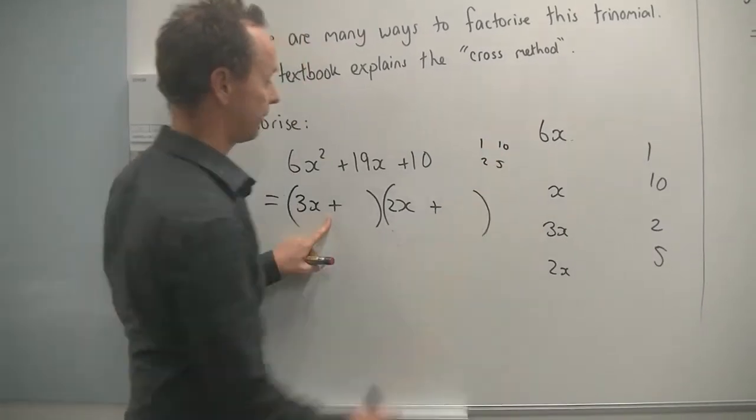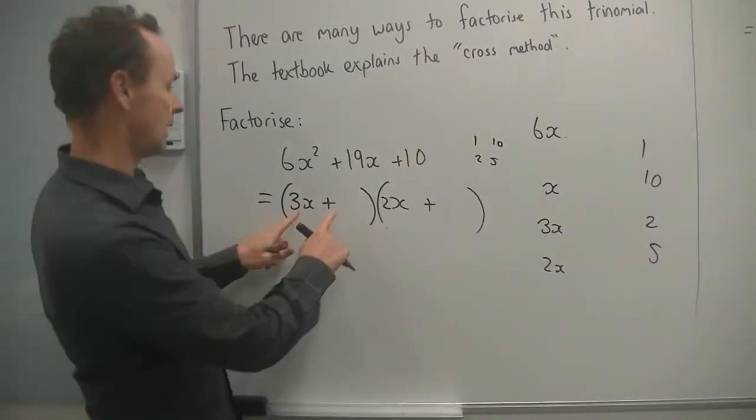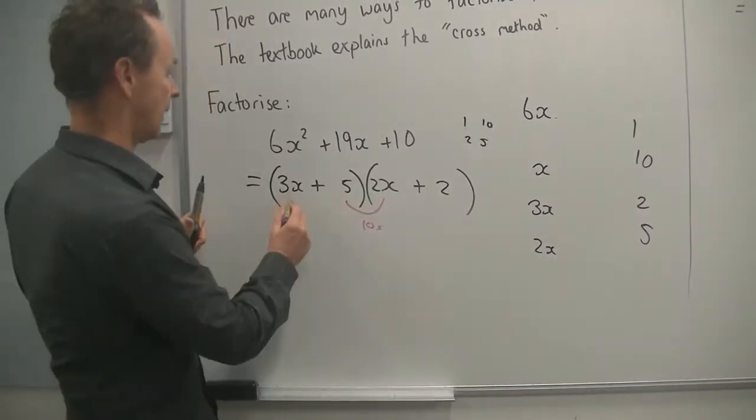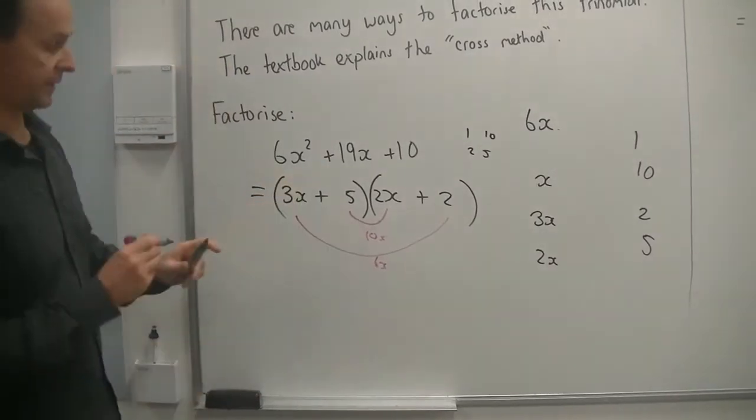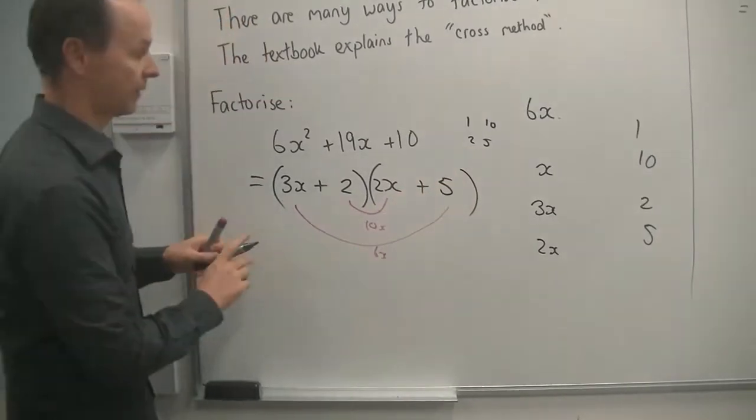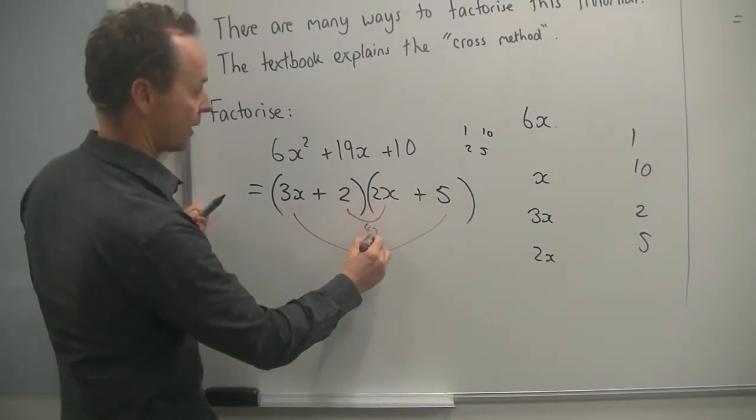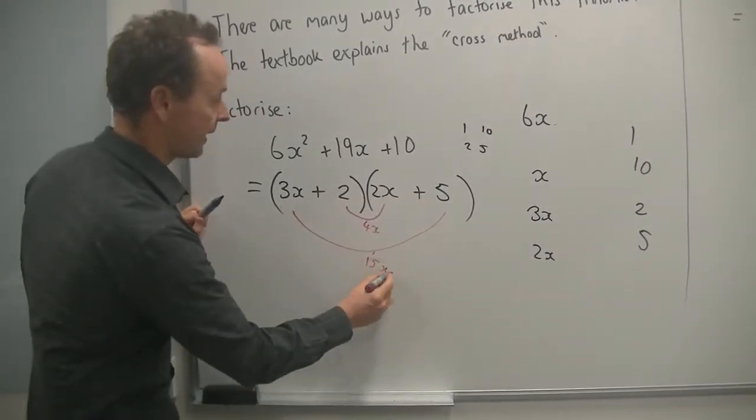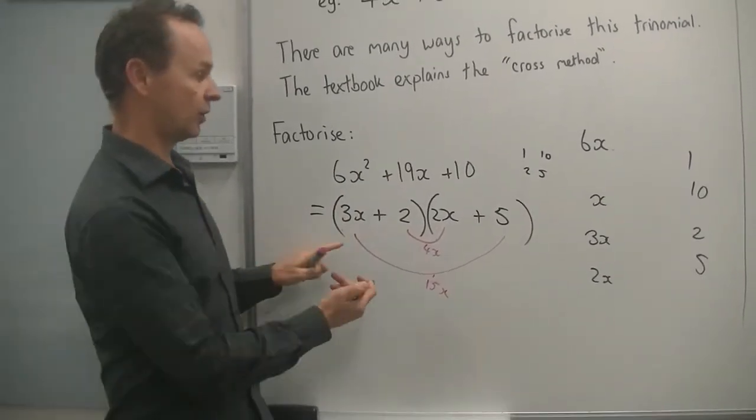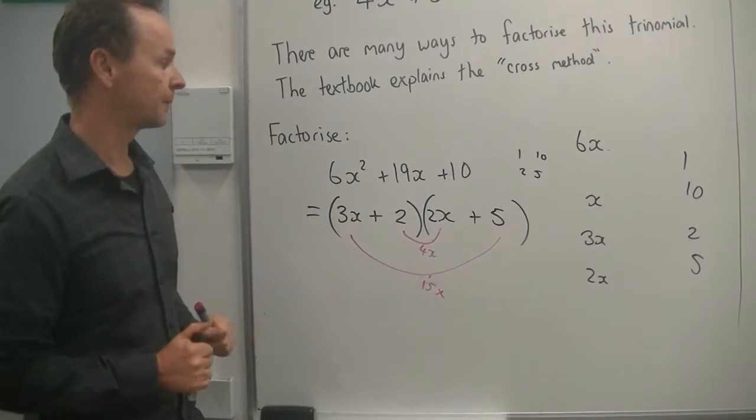So now I'm going to try factors of 10. 1 and 10 or 2 and 5. Generally speaking, I don't go to the extreme ones. I'll try the 2 and 5 first. So if I put a 5 there and a 2 there, this will give me 10x. And this one here will give me 6x. That adds to 16x. So that's not the right answer. What if we changed it around, made that a 2 and that a 5? What do we get then? So we've got 2 times 2x is 4x. 5 times 3x is 15x. 15x and 4x is 19x. So we did all that work, but I tried to explain it to you.